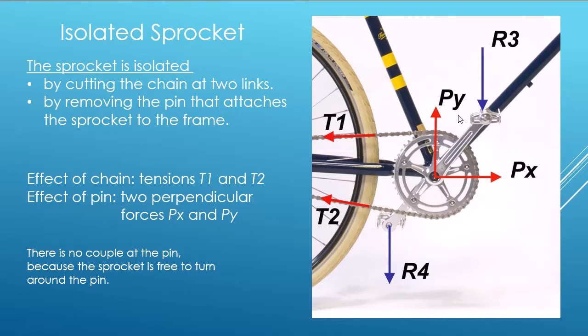And T1 and T2 are the tensions in the chain. And R3 and R4, as before, are the forces from the rider on the pedals. And just because you remove this pin, you have to include the pin's effect, and the pin's effect are marked here as PX and PY. There is no couple at the pin because the sprocket is free to turn around this pin.